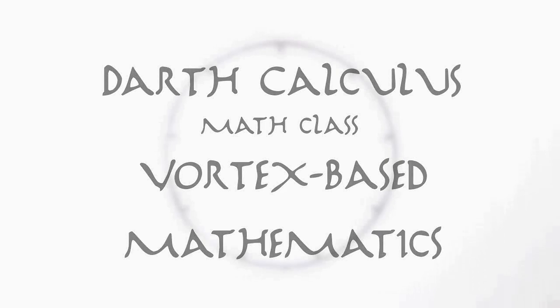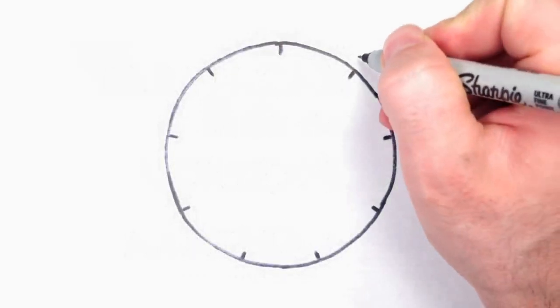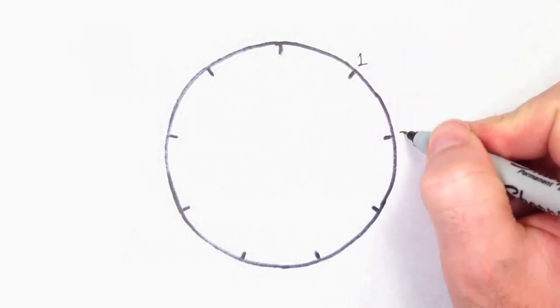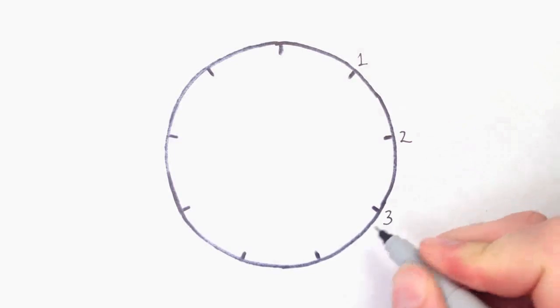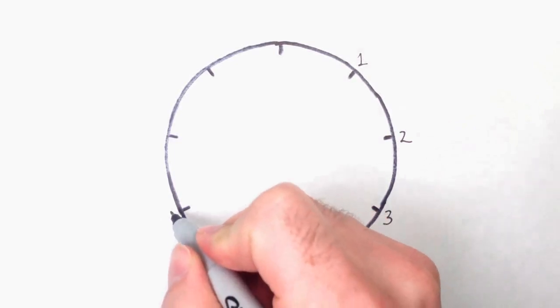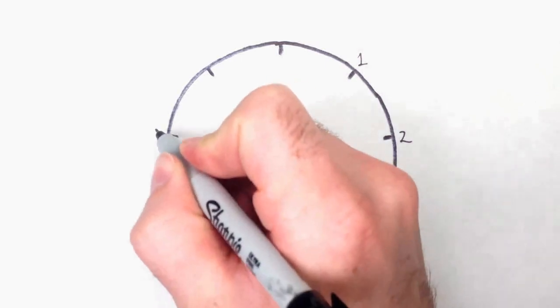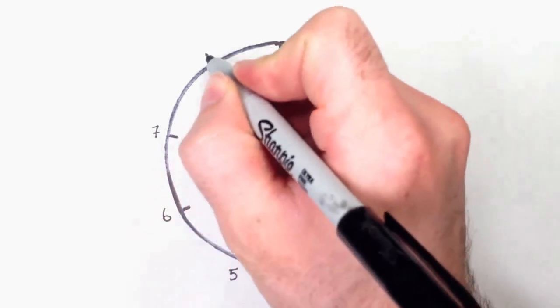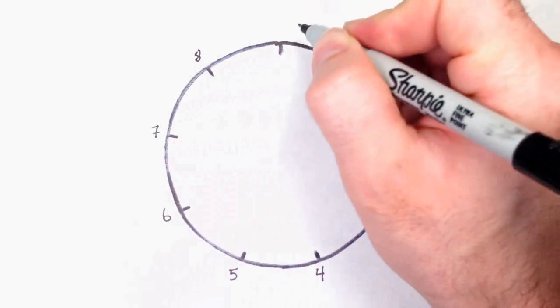Vortex-based mathematics is a form of numerology based on some idiosyncrasies of the decimal base 10 system. There is beauty in these patterns, but it's not what some make it out to be. So let's admire the beauty, but from a position of real understanding.